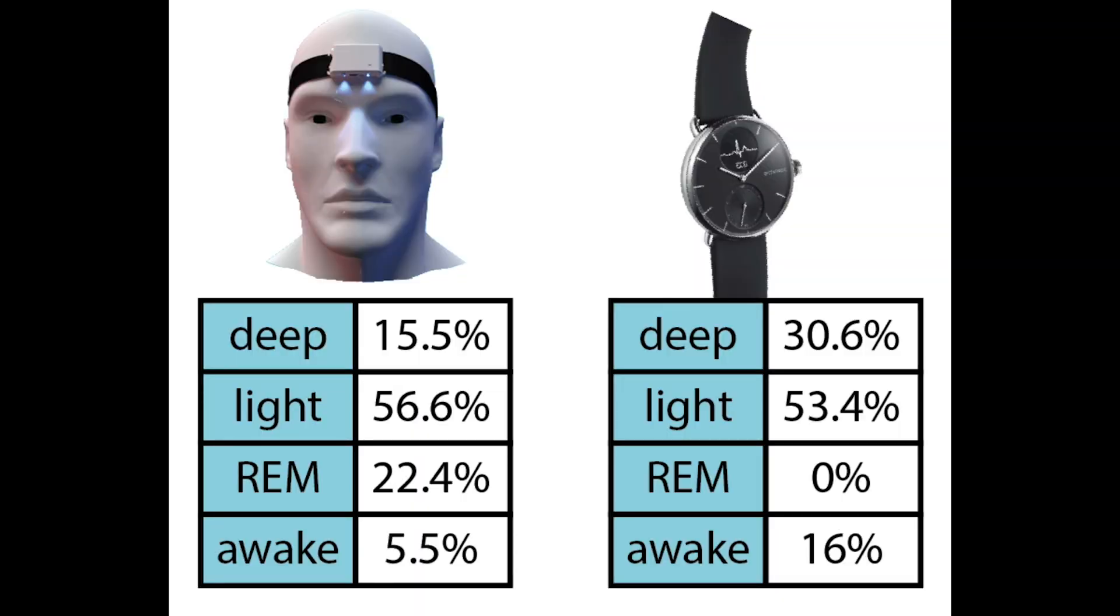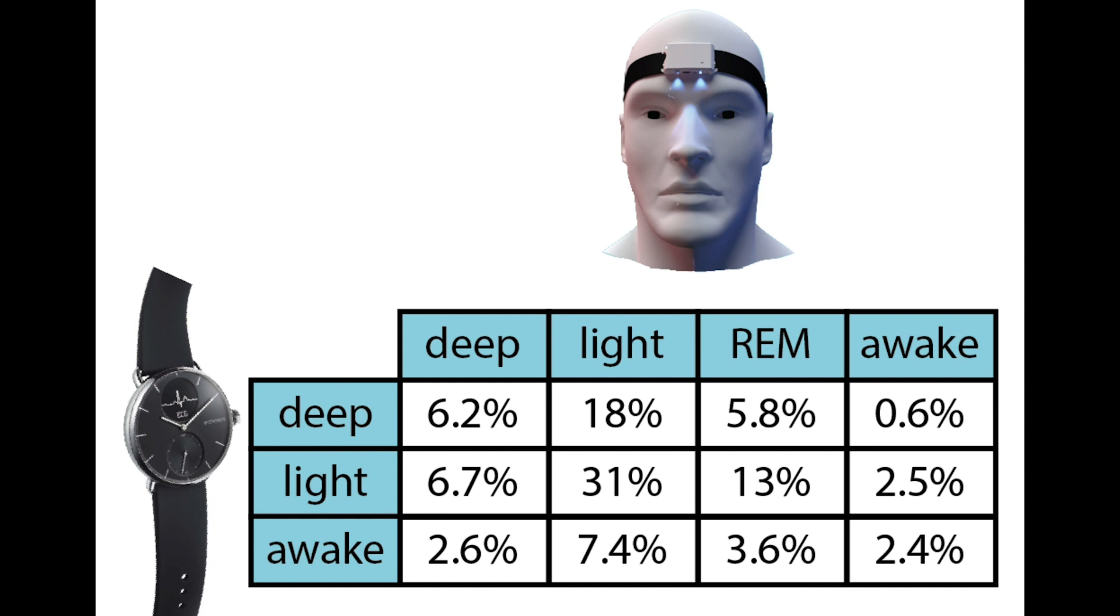So what I show here is over all eight nights the percentage of deep sleep, light sleep, REM sleep and awake I had. Now according to the EEG device I had about 15% deep sleep, 56% light sleep, 22% REM sleep and about 5% awake and this is about the same as I get for the large EEG monitor that I've used for several of the other tests. If we look at the ScanWatch on the other hand we see that I get 0% REM sleep which we know since it cannot predict REM sleep. We see I get about 53% light sleep which is about the same as I get with the EEG device. I get much more deep sleep about 30% and also much more time awake.